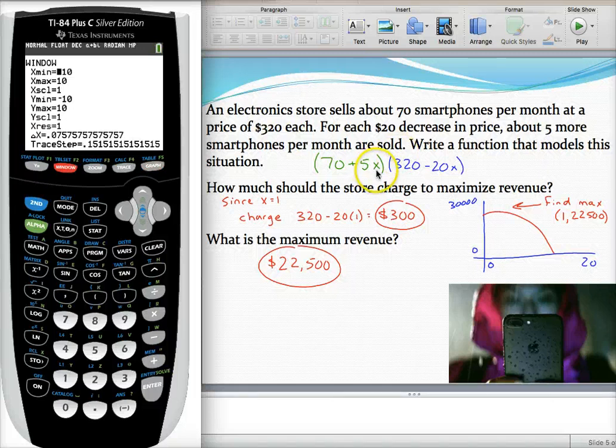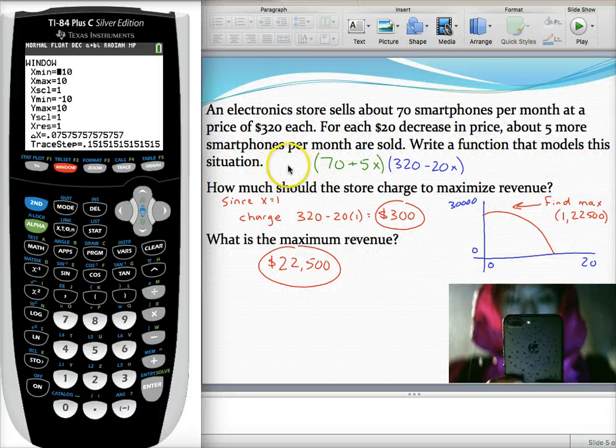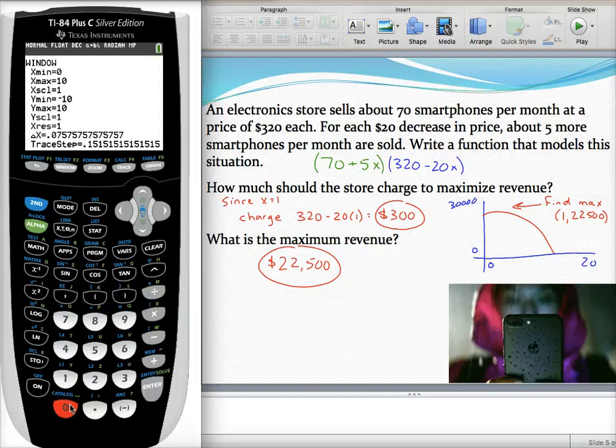When I do these problems, I always think about what X, our input, or what our output, I forgot to write the Y equals in front, represents. So in this case, X represents the times we change the price. Well, as a minimum, I'm going to use zero. I could change the price not at all and leave the price as is.